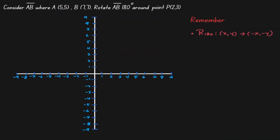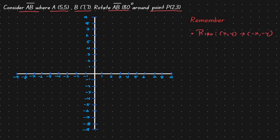For this example, let's consider a line segment AB where the coordinate points are at (5, 5) and at (7, 7). What we want to do is rotate that line segment by 180 degrees, where the point of rotation is at (2, 3). Because we have coordinate points, let's turn on our coordinate plane and place this information in it.